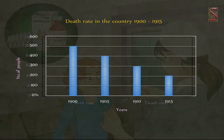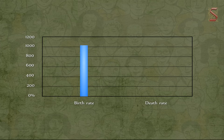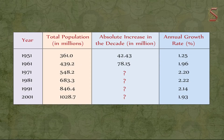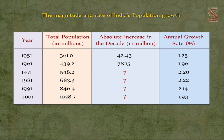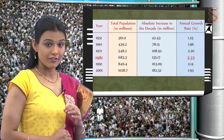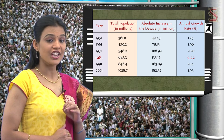High birth rates along with decreased death rates led to higher population growth. Birth rates then began to come down, resulting in a decline in the rate of population growth. A table shows the magnitude and rate of India's population growth, with the highest annual growth rate of 2.22 percent recorded in 1981. The graph clearly illustrates the percentage change over each decade.